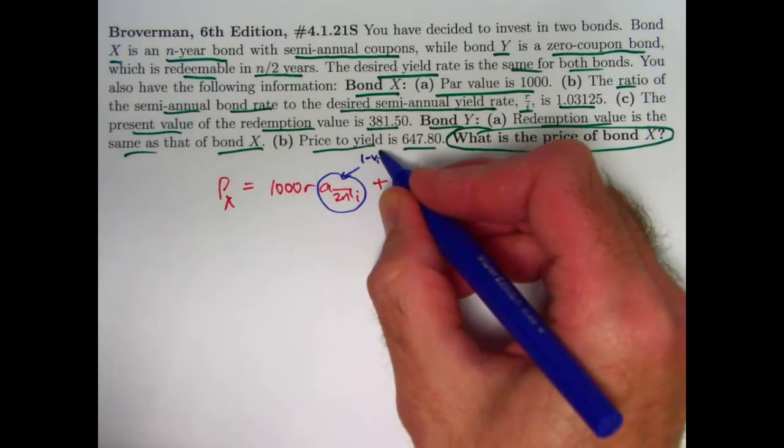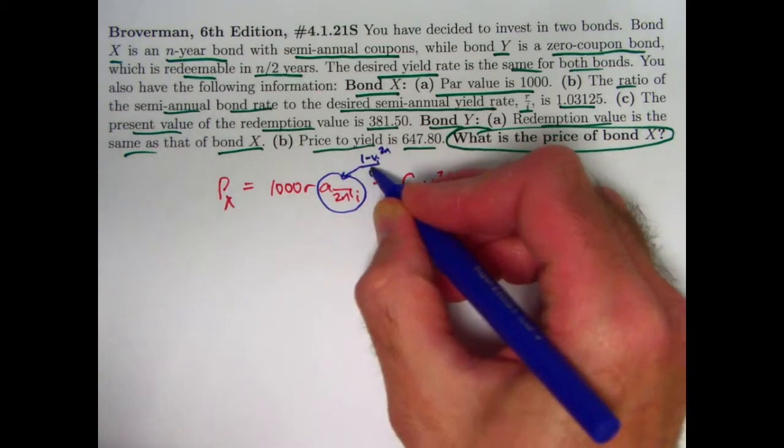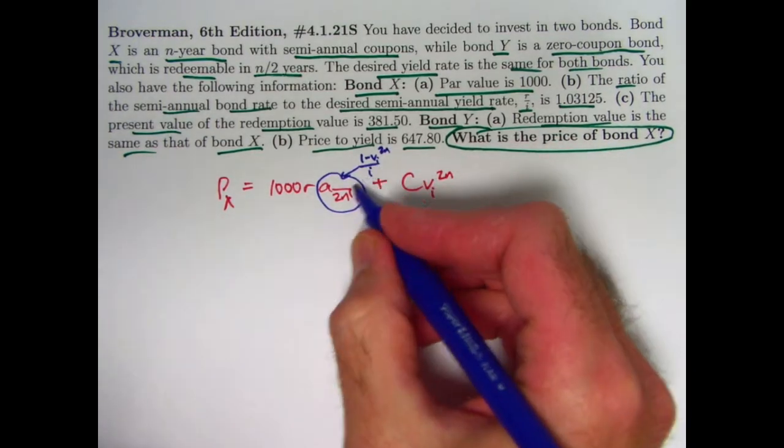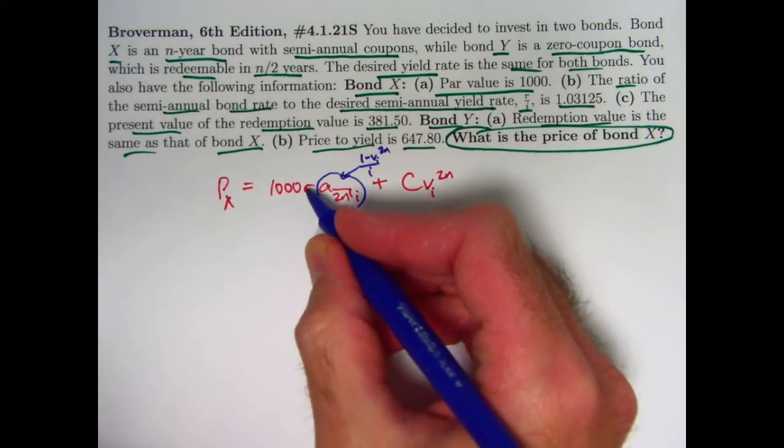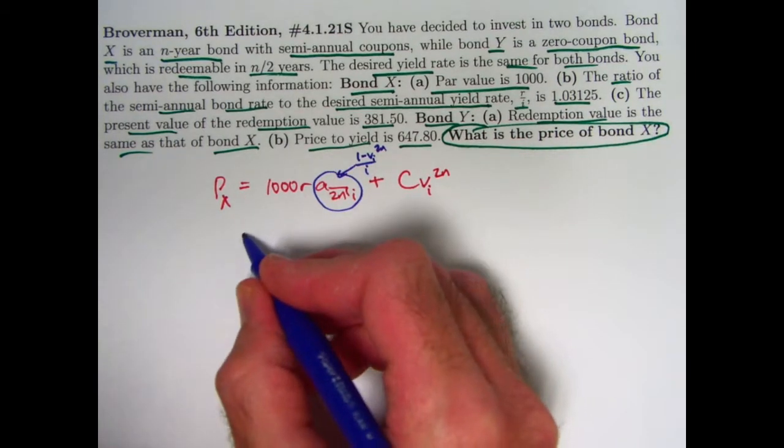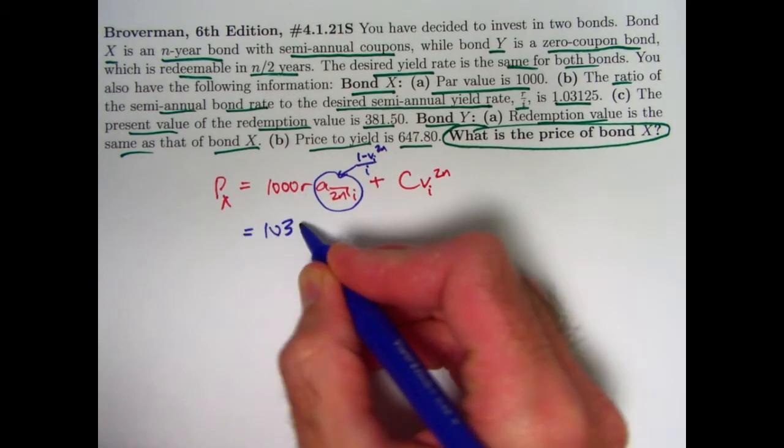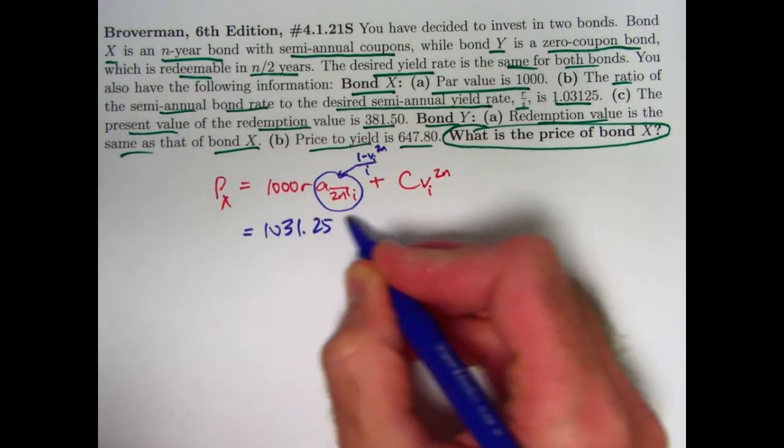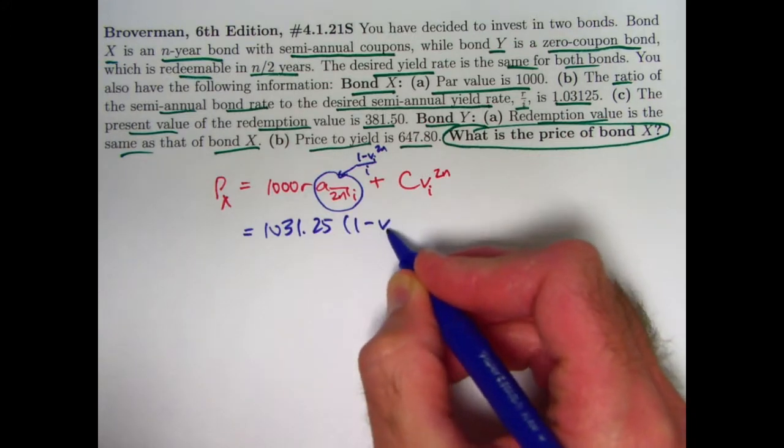This is 1 minus V^I to the 2N divided by I, and therefore I can bring that I below the R and replace R over I with 1.03125. Multiply by 1,000, you get 1,031.25 times 1 minus V to the 2N.